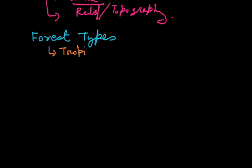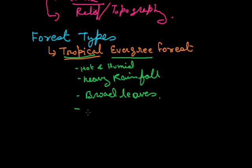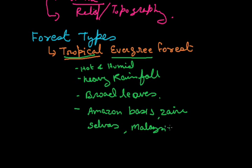First we will take the tropical evergreen forest. By name it is clear - tropical means hot and humid, and evergreen means which looks always green because of the heavy rainfall. For example, we can see broad leaves here because of this. These types of forests are found in the Amazon basin in South America, Zaire, Salvas, Malaysia, Vietnam, Indonesia, Myanmar etc. The main species which are found here are Ebony and Rosewood etc.